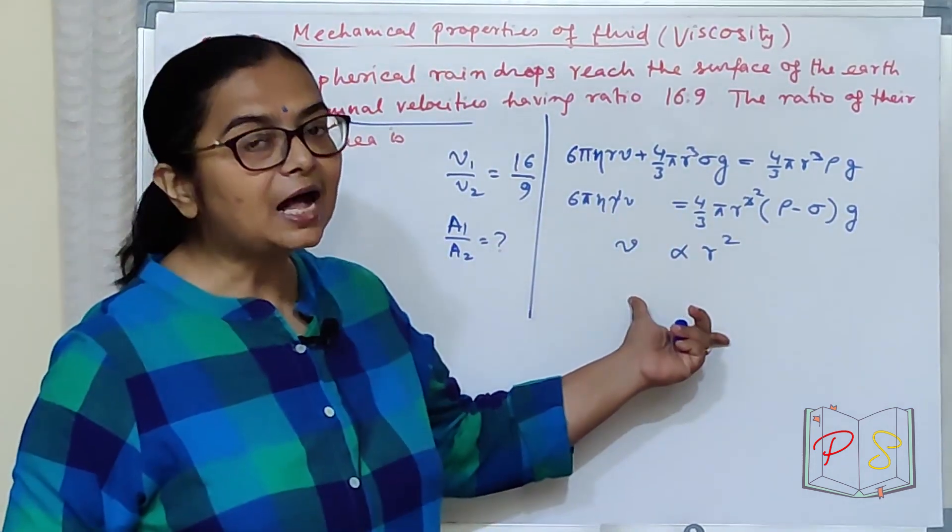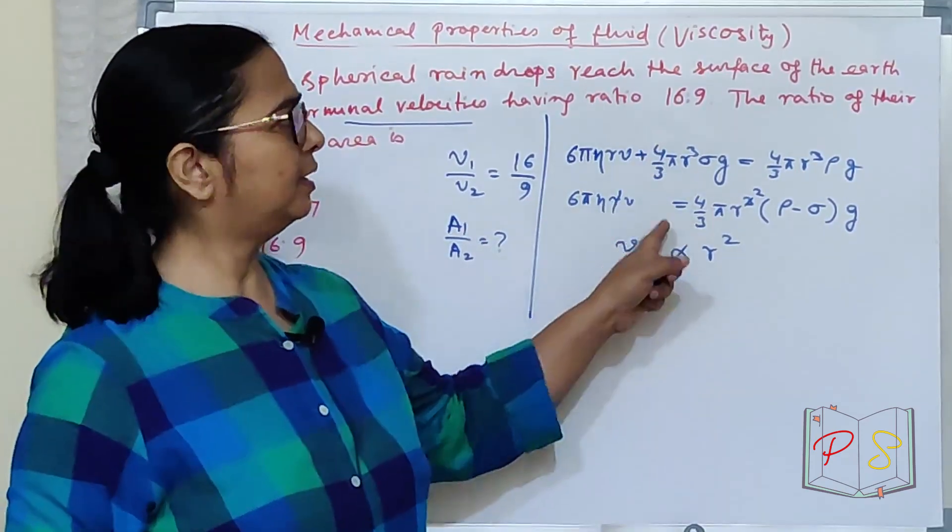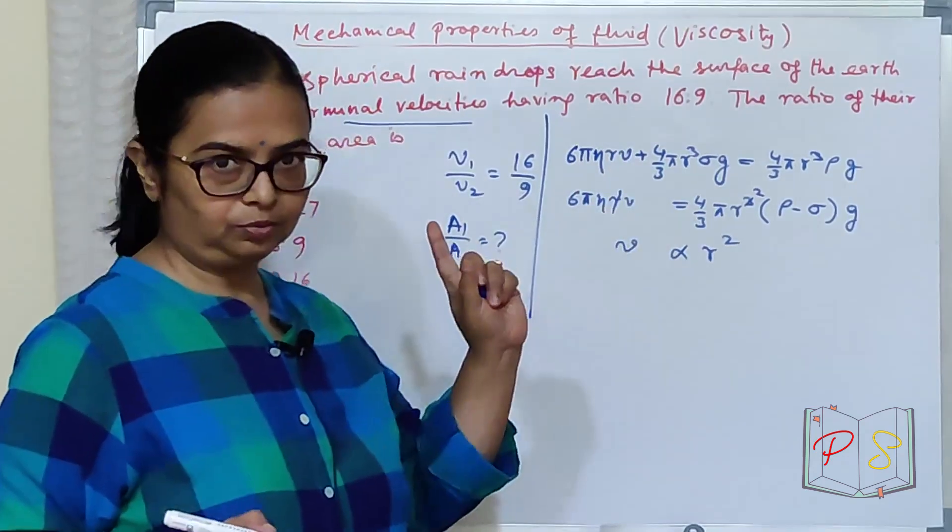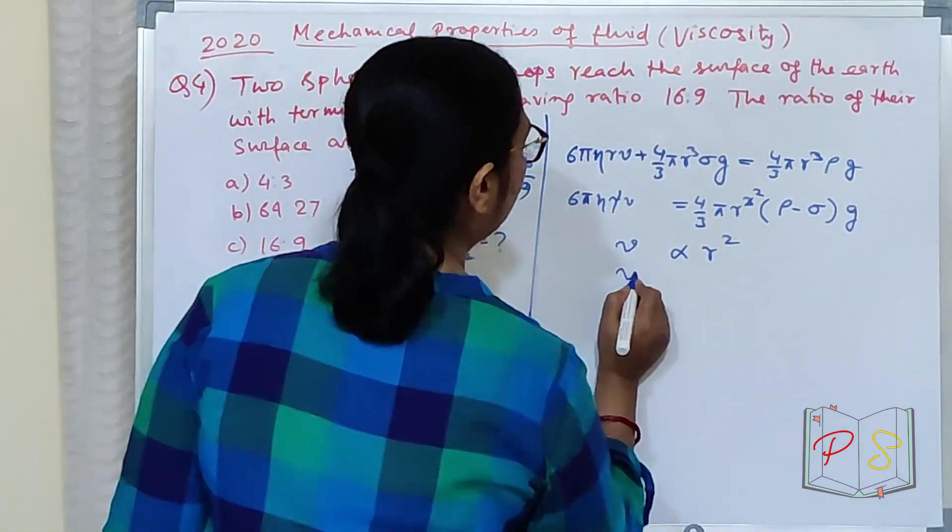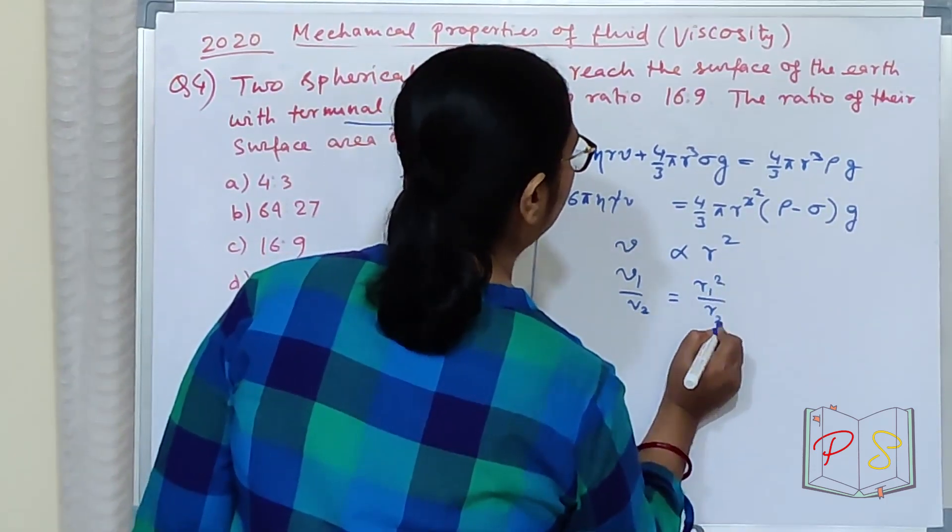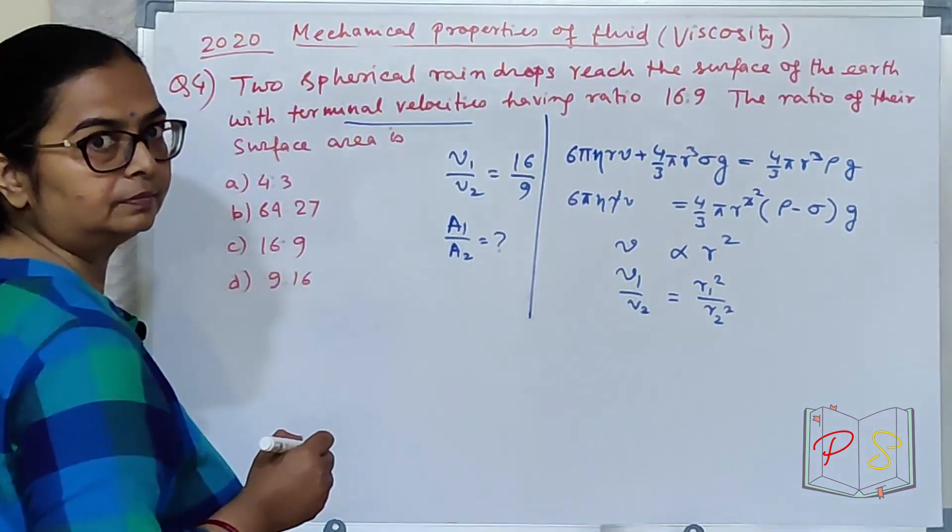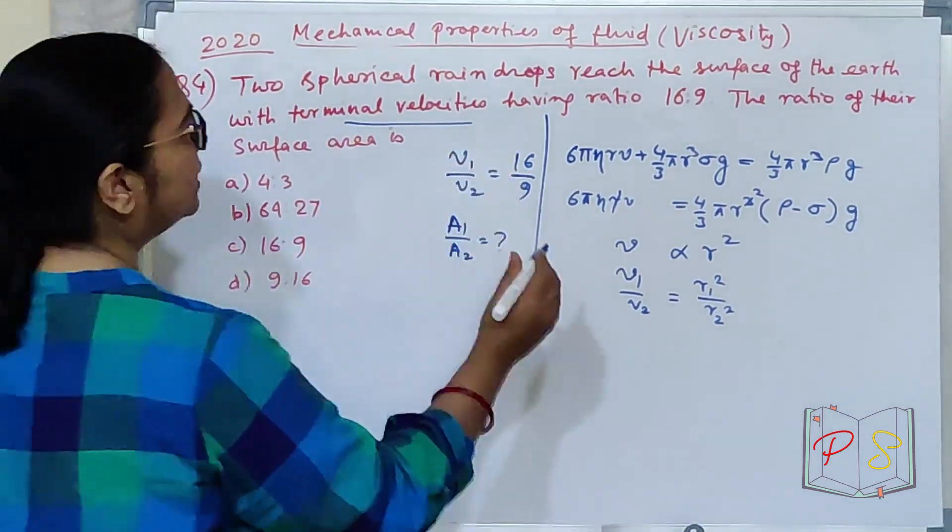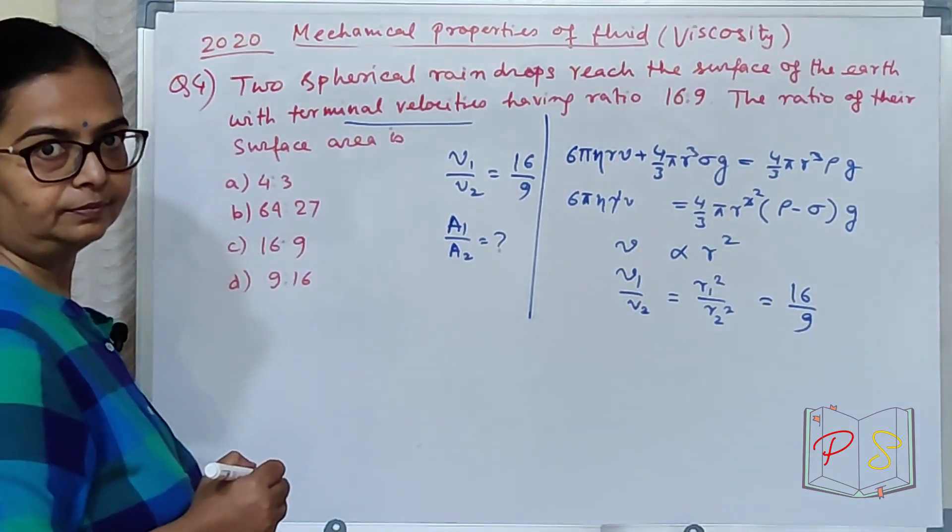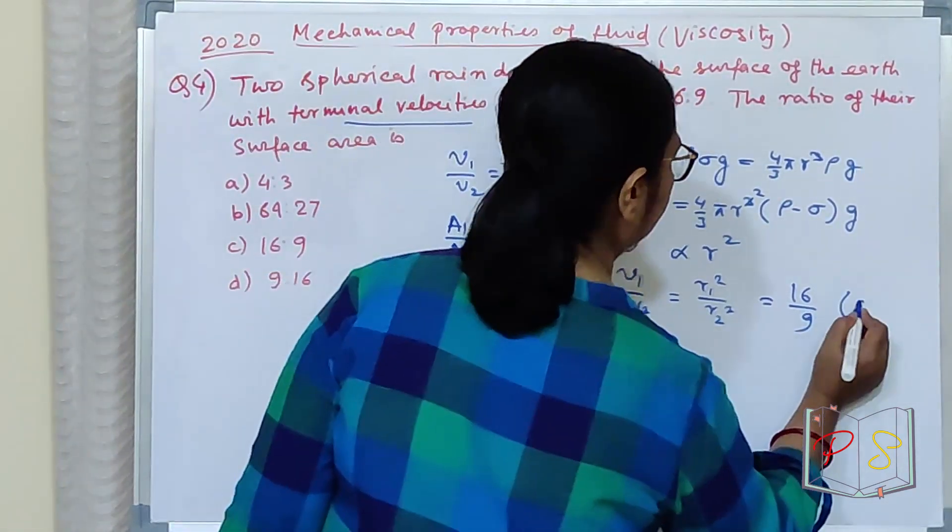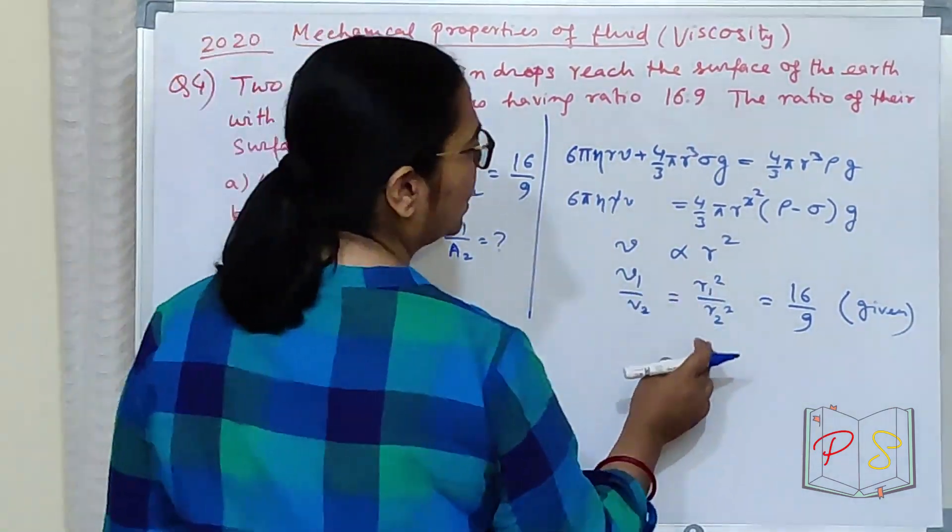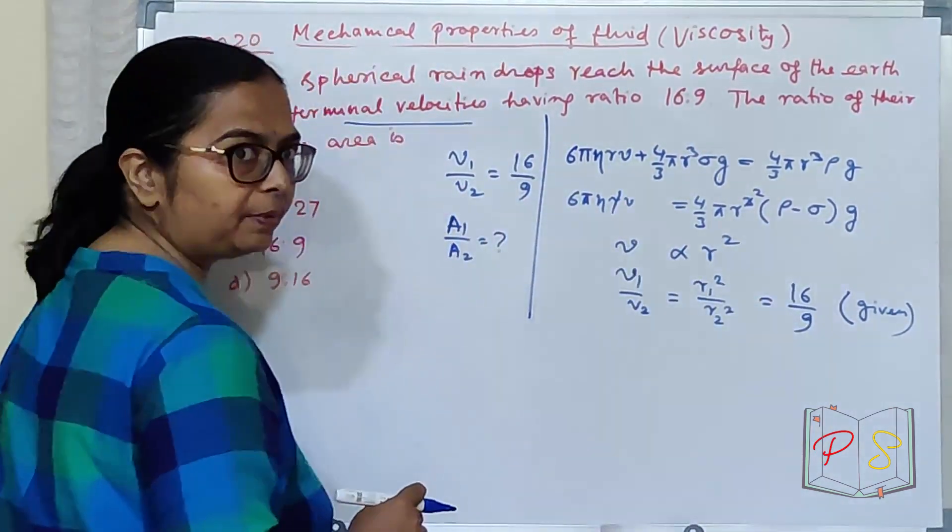E bala chiz agar ea tha aapko ee karna nahi patta. Lekin aajke dihipe kari ko. Thik hai? Kari ko. Tho akko kya mil ghiya? V1 by V2 is equal to r1 square by r2 square. V1 by V2 kya dehiya? 16 by 9. Eto question se hi dehiya. Given. This is given. Thik hai? Acha. Abhi, thom kya mil ghiya? r1 square by r2 square mil ghiya?